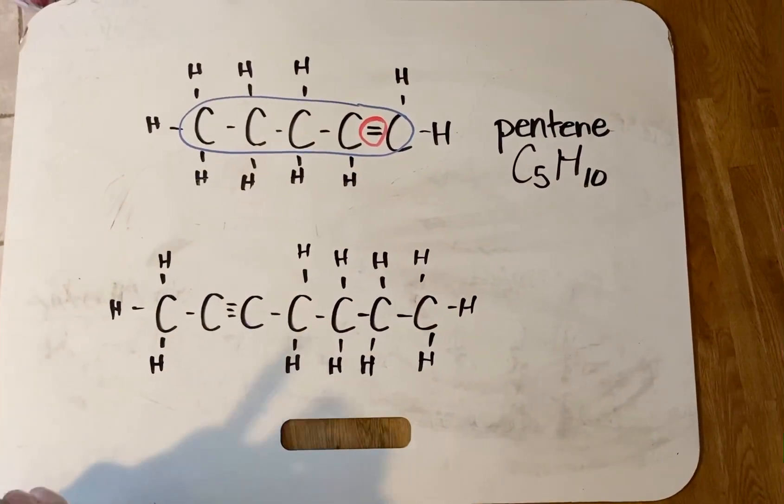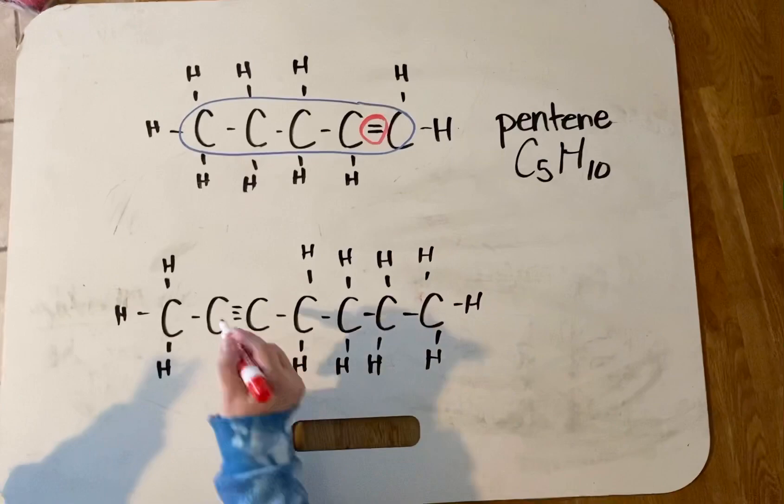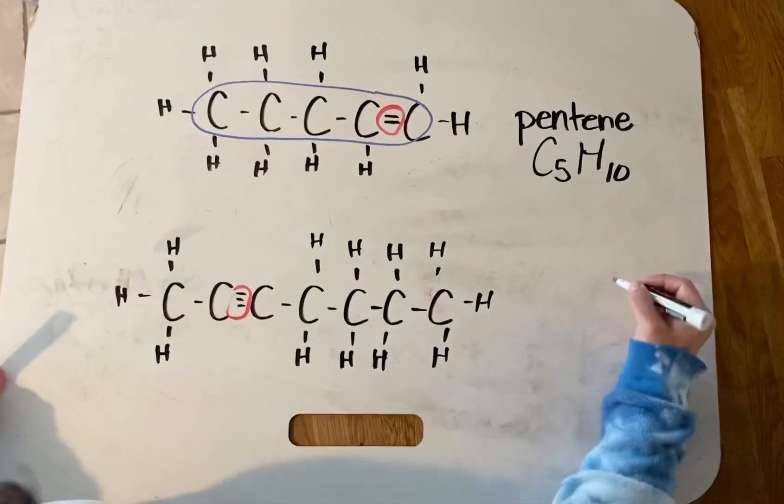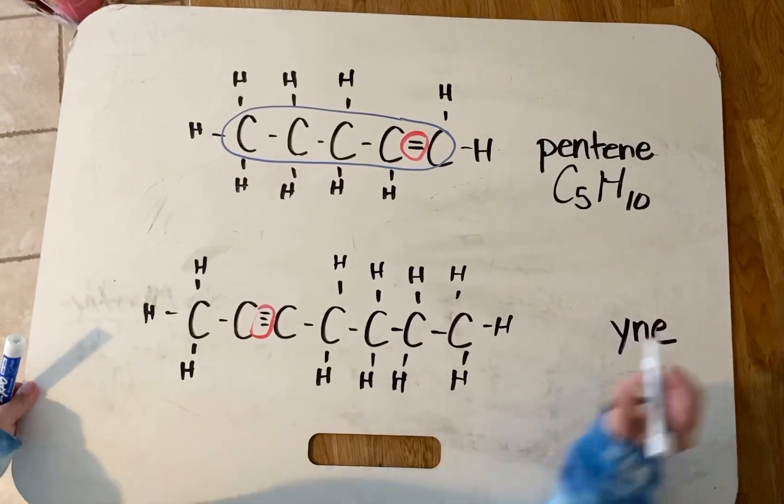If I look down on the bottom one here, the first thing I notice is, yes, I see a chain of carbons, but that triple bond is important. So when I see a triple bond, I know that we're going to end with -yne. It's an alkyne.